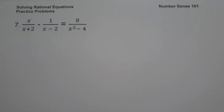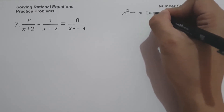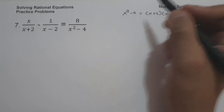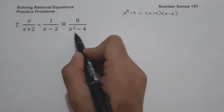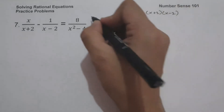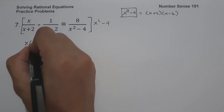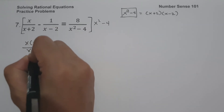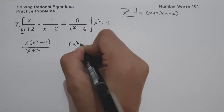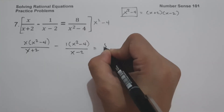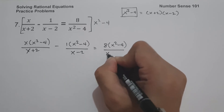On the last example, we have x over x plus 2 minus 1 over x minus 2 equals 8 over x squared minus 4. Since x squared minus 4 equals x plus 2 times x minus 2, the LCM of x plus 2, x minus 2, and x squared minus 4 is x squared minus 4. So let us multiply the whole equation by x squared minus 4. We have x times x squared minus 4 over x plus 2, minus 1 times x squared minus 4 over x minus 2, equals 8 times x squared minus 4 over x squared minus 4.